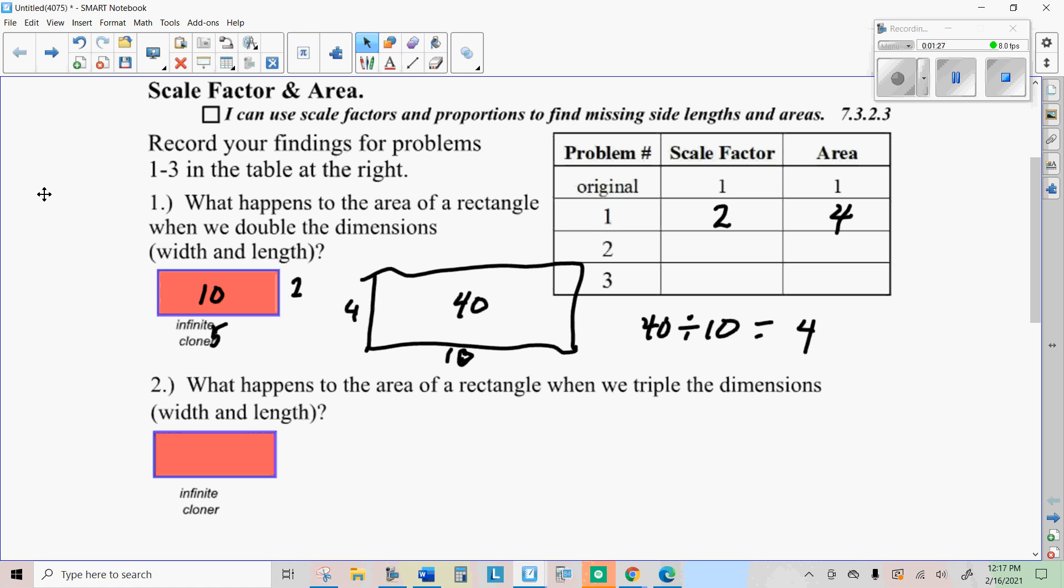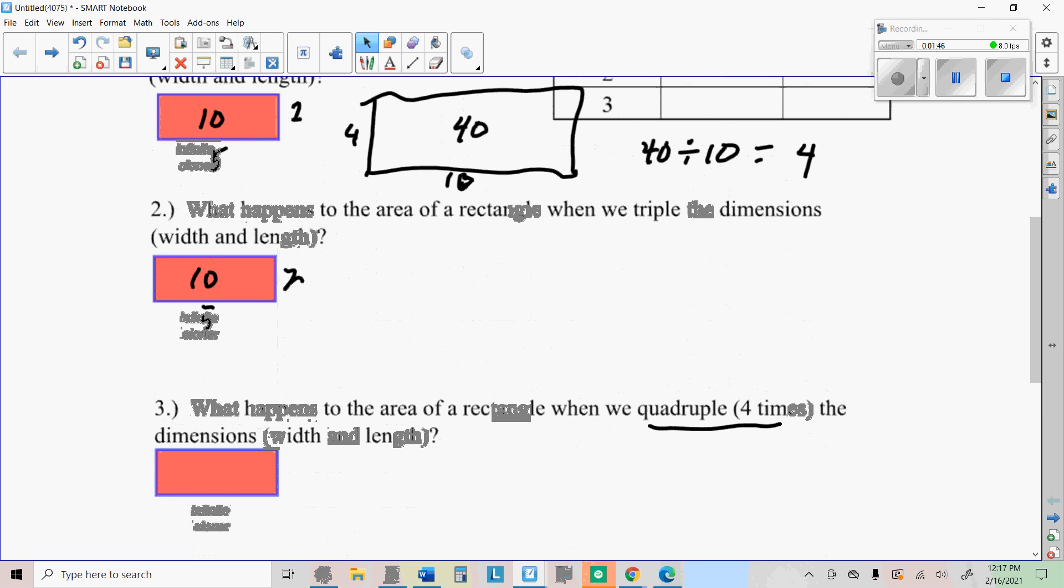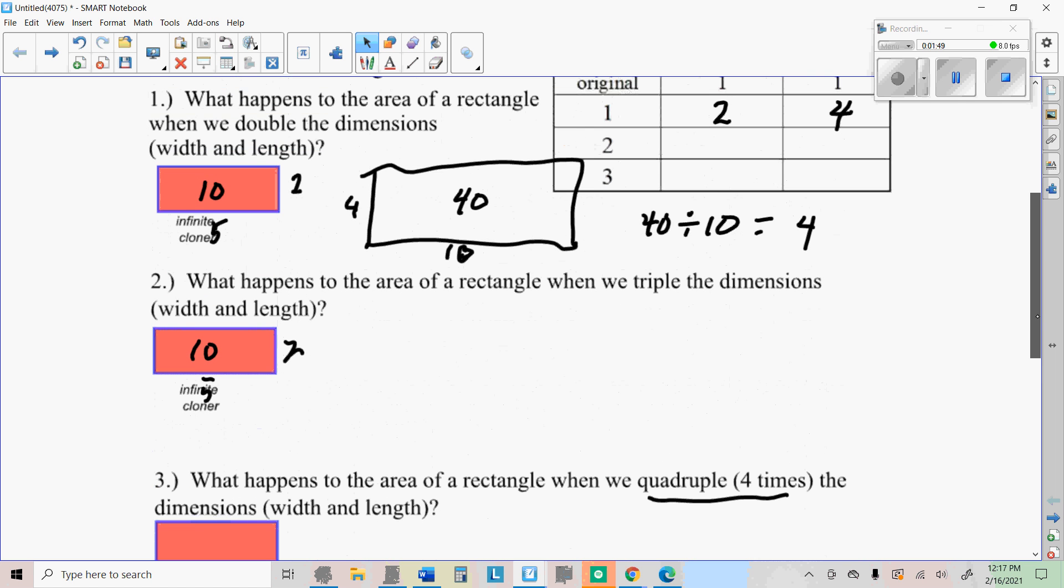So once you try the next one, triple the dimensions. So instead of two by five with an area of 10, you're going to make one that is the length and width triple. So go ahead and fill in the chart and go ahead and do the next one to quadruple it. See what happens and see if you get the right answers.